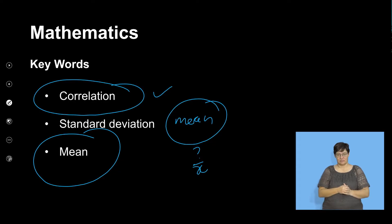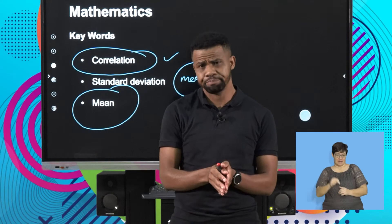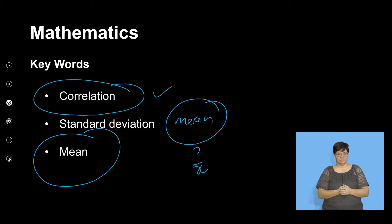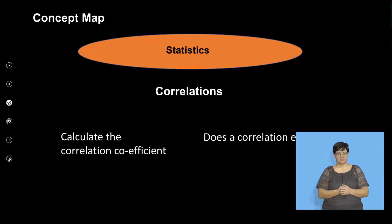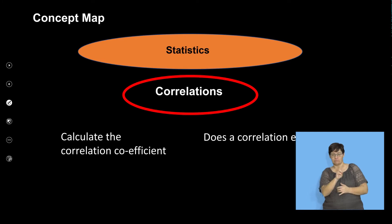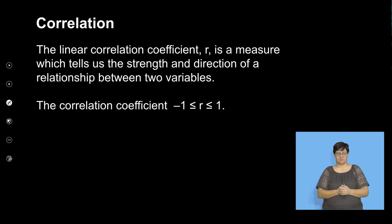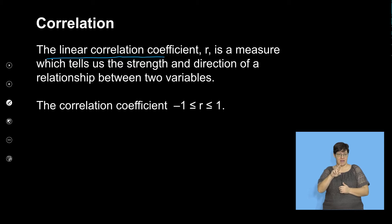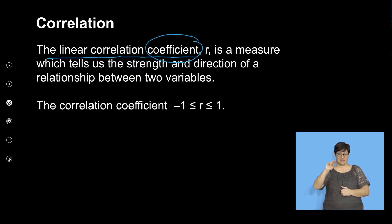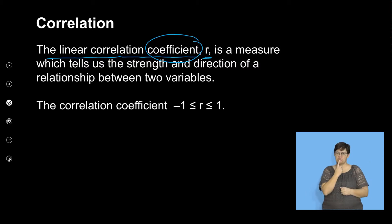I'd like you to remember what is correlation, standard deviation, and mean. So, correlation is the linear correlation coefficient and we're going to calculate this coefficient. It's denoted by the letter R, which is the correlation.